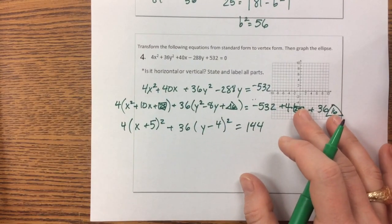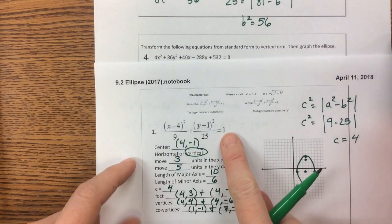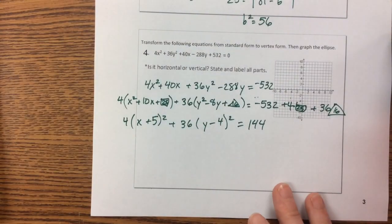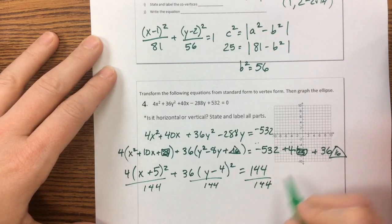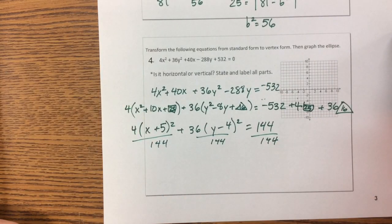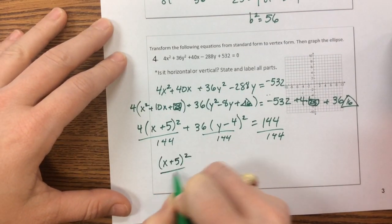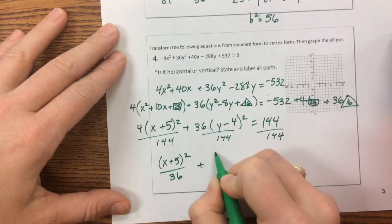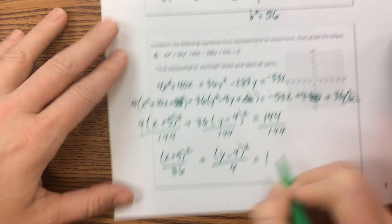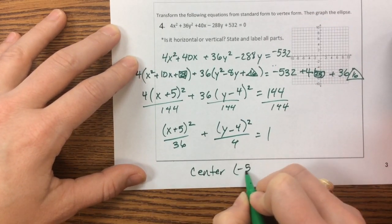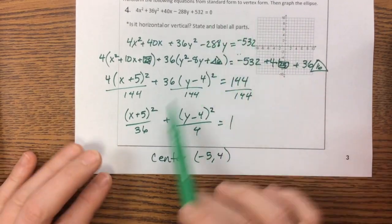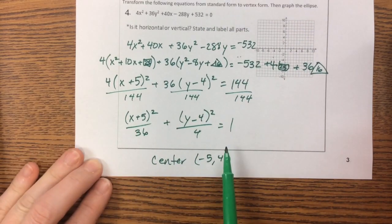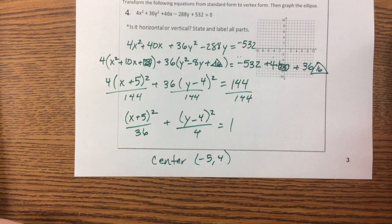The formula is always equal to 1, so divide everything by 144. 144 divided by 4 is 36, and 144 divided by 36 is 4, giving us (x + 5)² / 36 + (y - 4)² / 4 = 1. The center is at (-5, 4), and we move 6 units in the x direction and 2 units in the y direction. The tricky part was getting to standard form through completing the square.